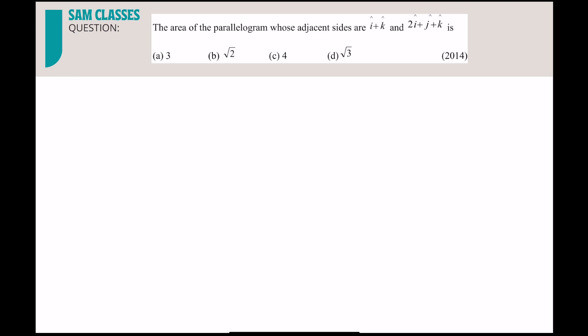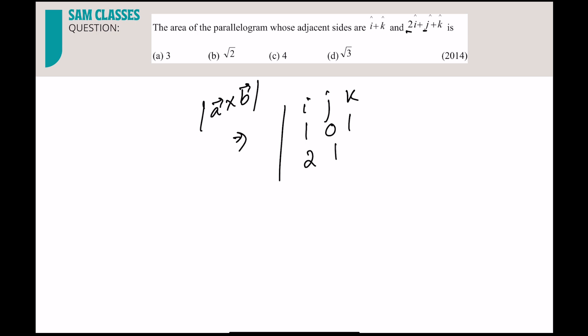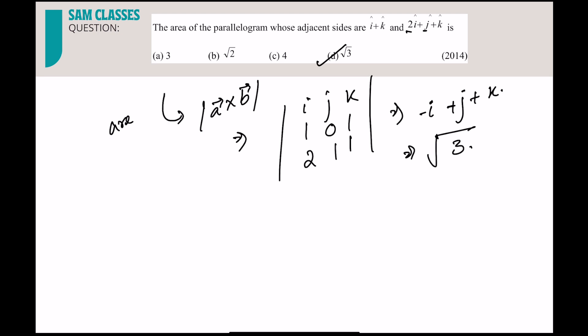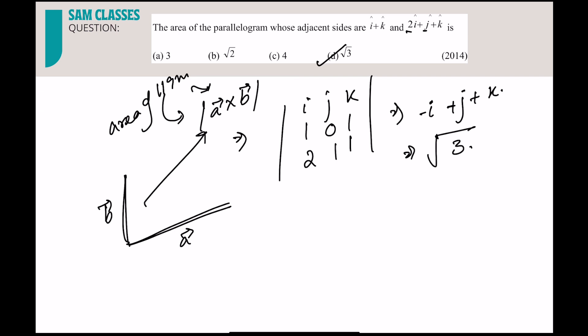Next question: area of a parallelogram whose adjacent sides are given. We have a direct formula — do the cross product and take the magnitude. Doing the cross product using i j k with rows 1 0 1 and 2 1 1, we get −i + j + k, so the answer is √3. For a triangle, the area is half of that.